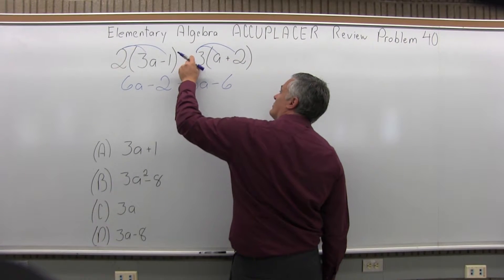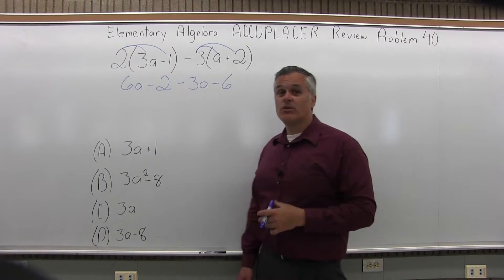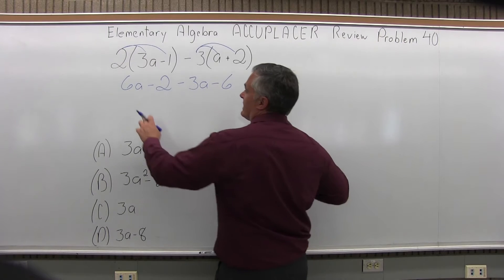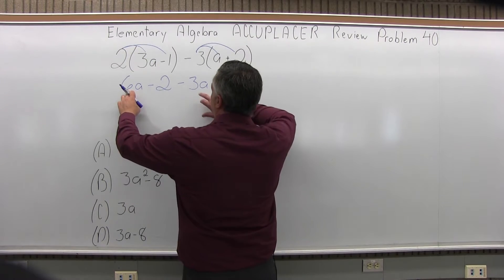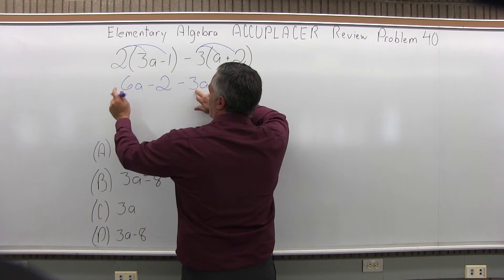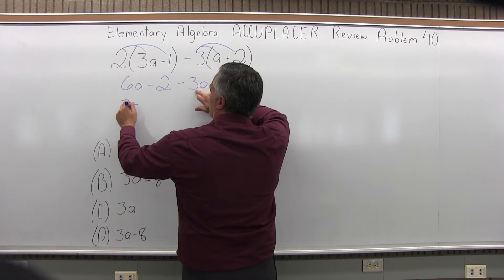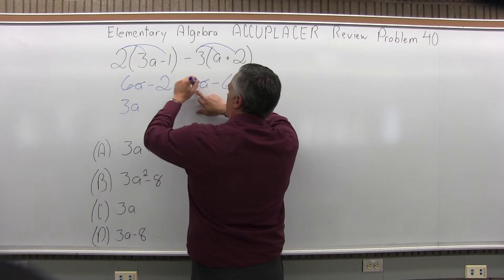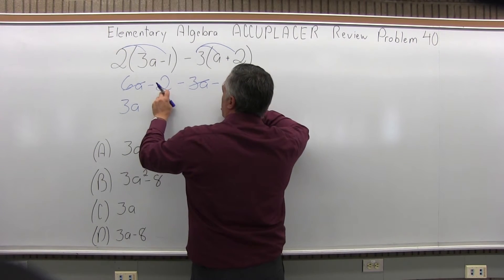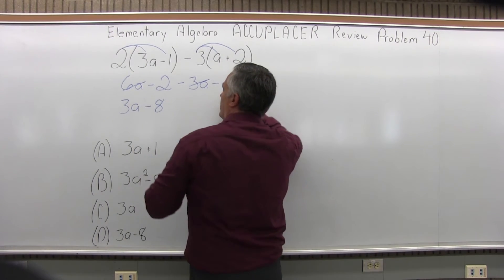Notice the 3 in front is a negative 3. So now I can put my A's together, put my numbers together. For the A's, I have positive 6A, negative 3A. Positive 6 minus 3 will give me 3A. So the A's are done — I've combined them. And then for the numbers, negative 2 and negative 6 go together as negative 8.